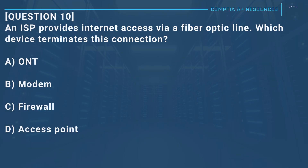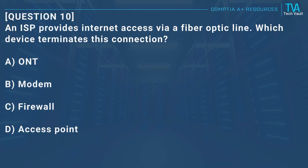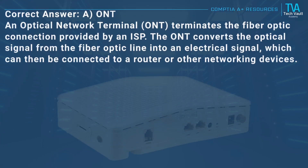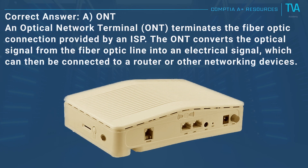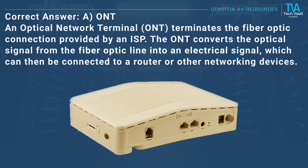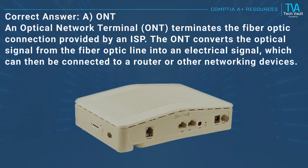Question 10: An ISP provides internet access via a fiber optic line. Which device terminates this connection? A, ONT. B, modem. C, firewall. D, access point. Correct answer: A, ONT. An optical network terminal (ONT) terminates the fiber optic connection provided by an ISP. The ONT converts the optical signal from the fiber optic line into an electrical signal, which can then be connected to a router or other networking devices.